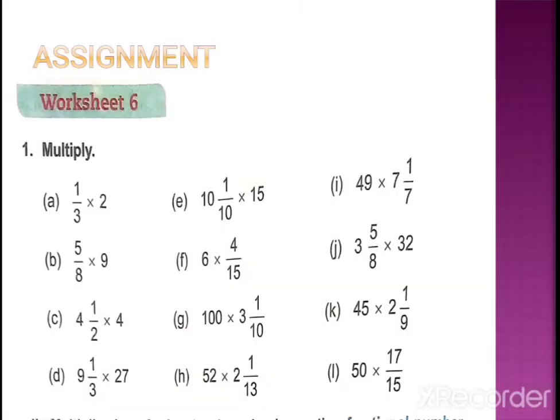Now let's learn multiplication by a magic code — a trick I made for you. The method is the same: the numerator multiplies with the numerator, and the denominator multiplies with the denominator. If there is a whole number, first represent it in fraction form. If there is a mixed number, first convert it to an improper fraction — that is, represent it in fraction form. Then the step is: we multiply numerator to numerator and denominator to denominator.